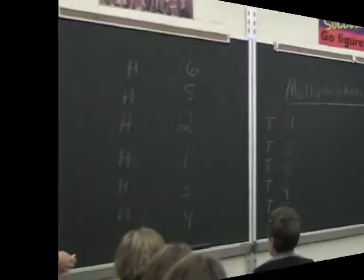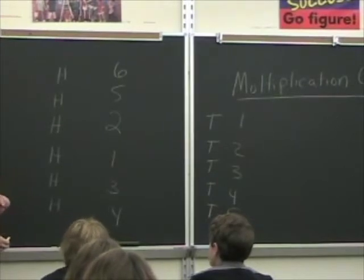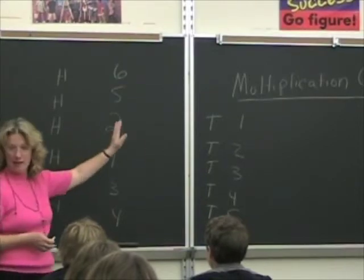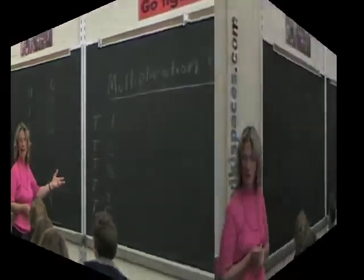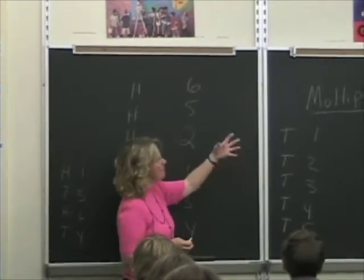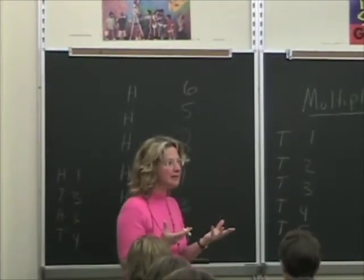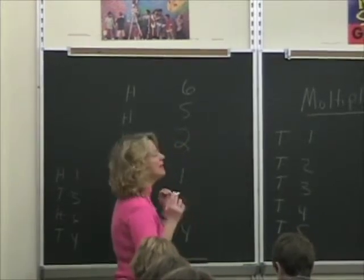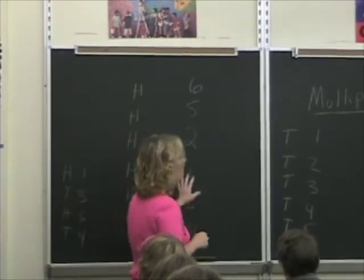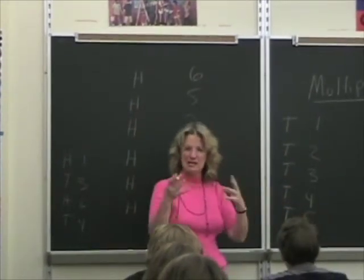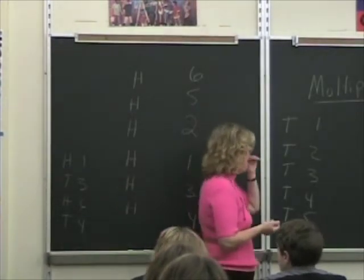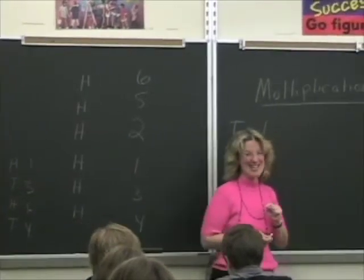Do you think it's smart to exhaust all the head possibilities first and then all the tail possibilities and then count them up? Do you think I might miss one? Yes. So whenever we mathematicians start trying to look at all the possible things that could happen, we like to build little tables, little charts, and we like to exhaust all the possibilities systematically. But that takes a long time, right?